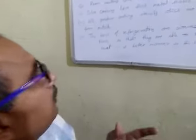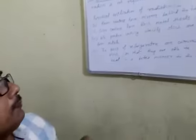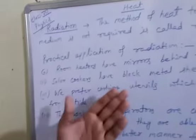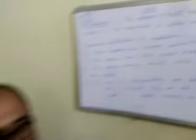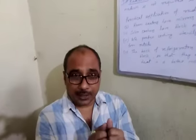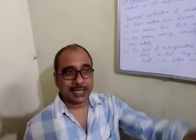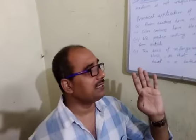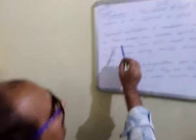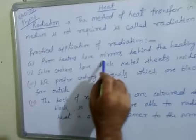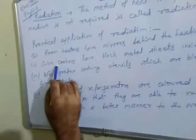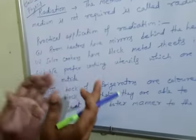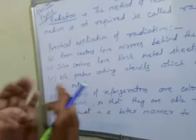इसी तरह से solar cooker में जो metal sheet होती है cooker के अंदर, उसको black कर देते हैं ताकि वो heat absorb करे और खाना जल्दी पके। फ्रिज के पीछे का जो portion है उसको भी black कर दिया जाता है ताकि heat surrounding में easily dissipate हो जाए। Solar cookers have black metal sheets inside, ताकि वो heat absorb करके रखें और आपका खाना जल्दी बने।